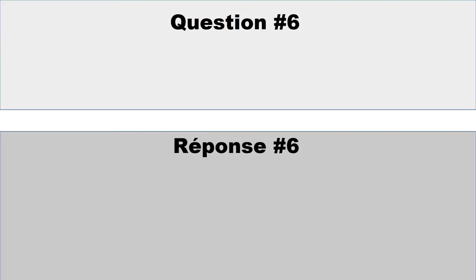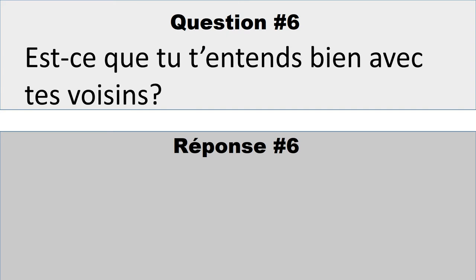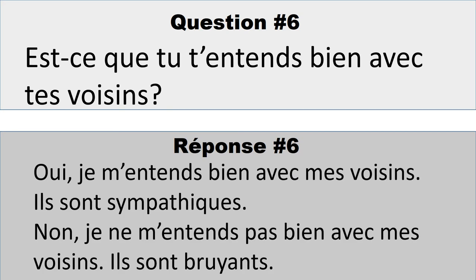Question number six: Est-ce que tu t'entends bien avec tes voisins? There are two key words here. «Voisins» means neighbors, and «tu t'entends bien» means get on well with. So the question is: do you get on well with your neighbors? You could say «oui, je m'entends bien avec mes voisins — ils sont sympathiques», or «non, je ne m'entends pas bien avec mes voisins — ils sont bruyants». The main thing is to understand the question.